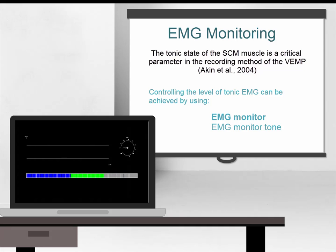When the patient being tested has a contracted value that is within the range selected by the operator, the measurement bar will be green indicating good contraction of the muscle. If the patient under-contracts or over-contracts, the value is shown red or blue depending on the ear which is being stimulated.